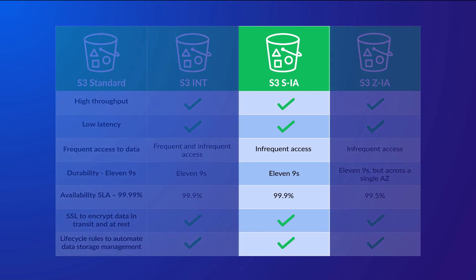S3 Standard Infrequent Access. This can be seen as the equivalent to the Infrequent tier from the Intelligent Tiering class, as it is designed for data that does not need to be accessed as frequently, and yet still offers high throughput and low latency access much like S3 Standard does. It carries 11 nines of durability across multiple AZs, shares the 99.9% availability SLA of Intelligent Tiering, and comes at a cheaper cost than S3 Standard. SSL encryption in transit, data at rest encryption, and lifecycle rules are all supported.